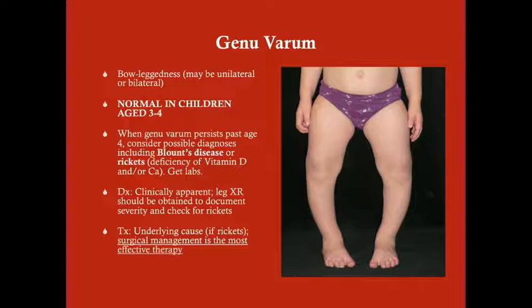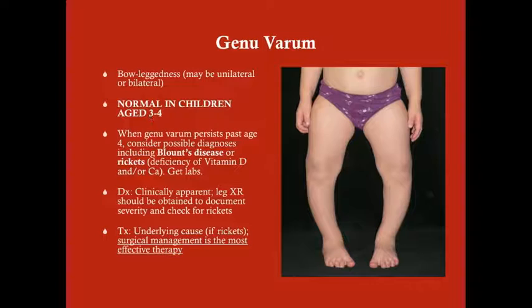Genu varum is the opposite — bow-leggedness — where the legs curve apart from each other. This can also be unilateral or bilateral. It's also normal in children age three to four, though it's a more restricted age period than genu valgum. After age four, the child should no longer have genu varum.